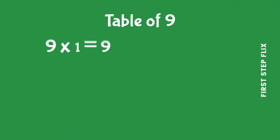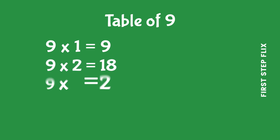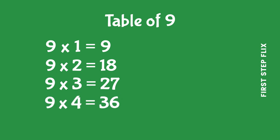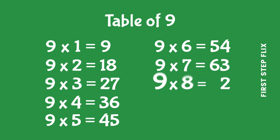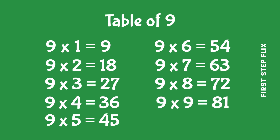Let's repeat. 9 ones are 9, 9 twos are 18, 9 threes are 27, 9 fours are 36, 9 fives are 45, 9 sixes are 54, 9 sevens are 63, 9 eights are 72, 9 nines are 81, 9 tens are 90.